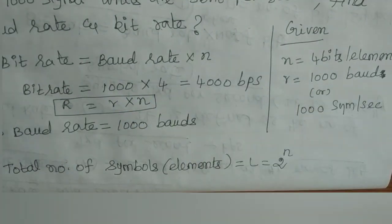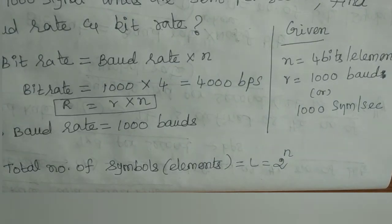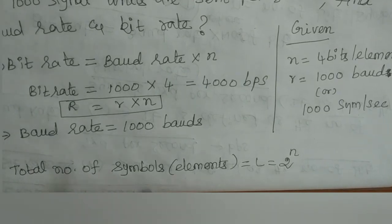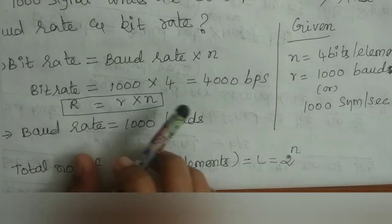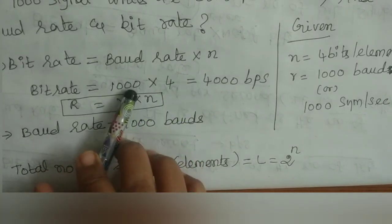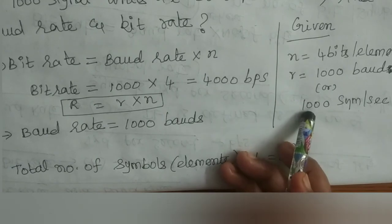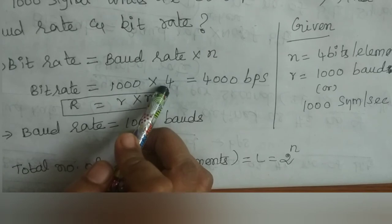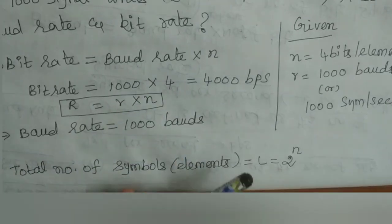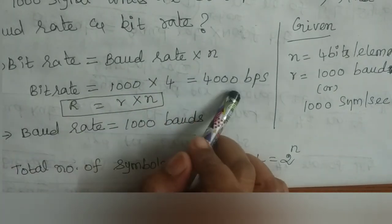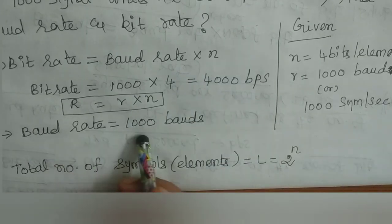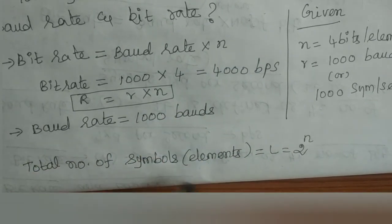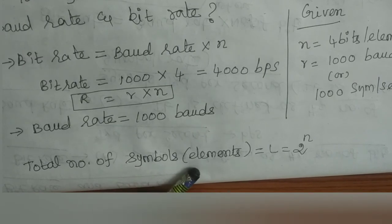The baud rate of 1000 baud is given, and the number of bits per symbol is 4. Using the formula, bit rate R equals baud rate r into n: 1000 into 4 equals 4000 bits per second. So the bit rate is 4000 bits per second and the baud rate is 1000 baud.